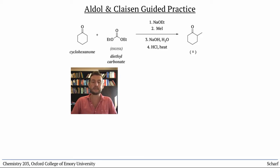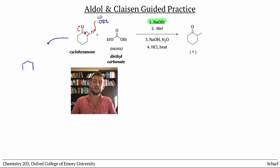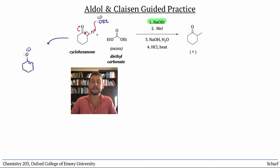If we combine cyclohexanone and excess diethyl carbonate in the presence of sodium ethoxide, what happens? Well, ethoxide is a base, and the only reasonably acidic protons in either of these two molecules are the alpha protons on the ketone. Diethyl carbonate isn't even enolizable. Even though we only make a tiny quantity of the nucleophilic enolate, it is swimming in a sea of electrophiles. Since diethyl carbonate is present in excess, that's the most likely electrophile for it to react with, rather than a molecule of unenolized ketone.